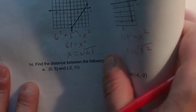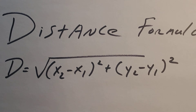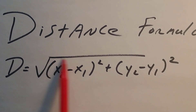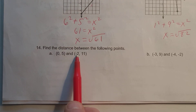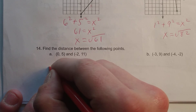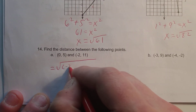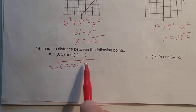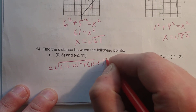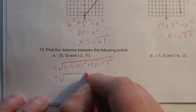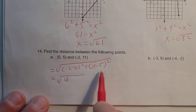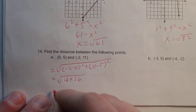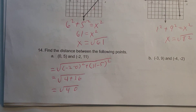Down here is when we had to actually apply the formula. Remember, the distance equals the square root of the change in X squared plus the change in Y squared. So this is our X1, Y1, and this is our X2, Y2. We're going to get the square root of the change in X: negative 2 minus 0, squared, plus 11 minus 5, squared. Negative 2 minus 0 is negative 2 — negative 2 squared is positive 4. 11 minus 5 is 6 — 6 squared is 36. So this is going to be the square root of 40.